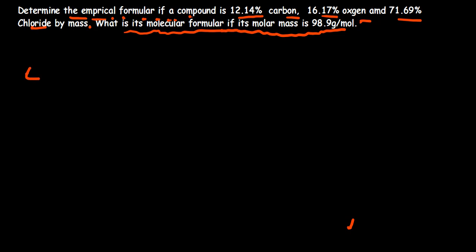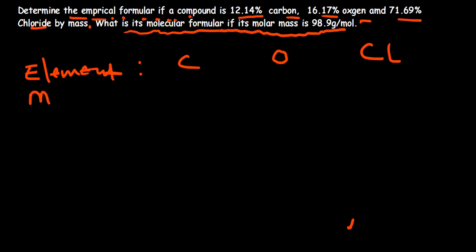Remember what I said: you first put your element. So what elements have we been given here? We've been given carbon, so you put them in the order given: carbon, then oxygen, then chlorine (Cl). After writing the element, you write the percent mass — 12.14 for carbon, 16.17 for oxygen, and 71.69 for chlorine.